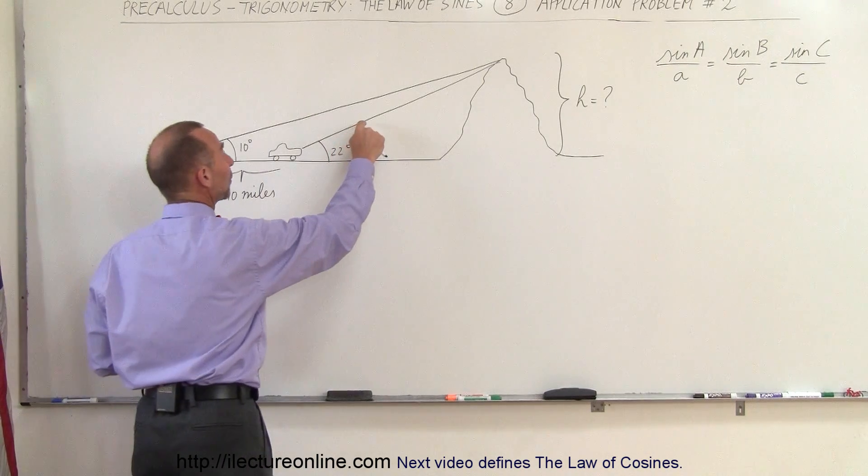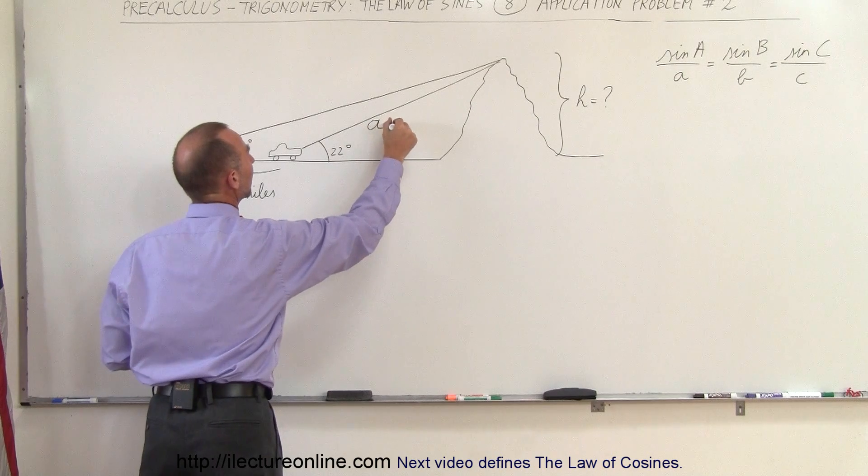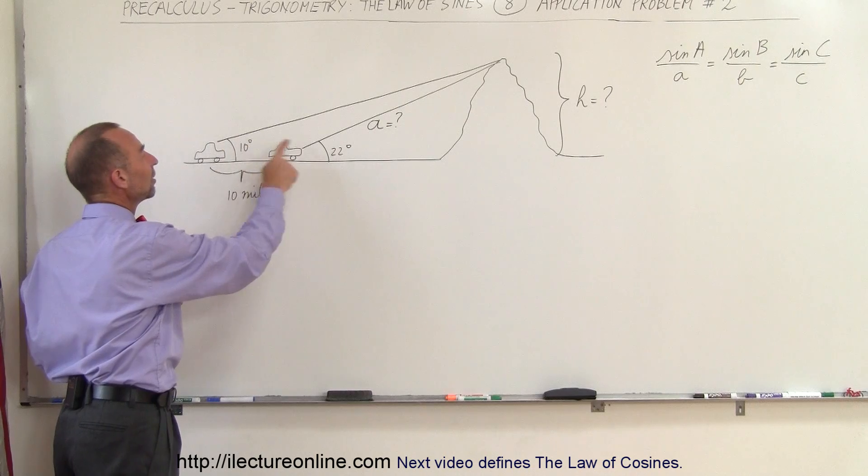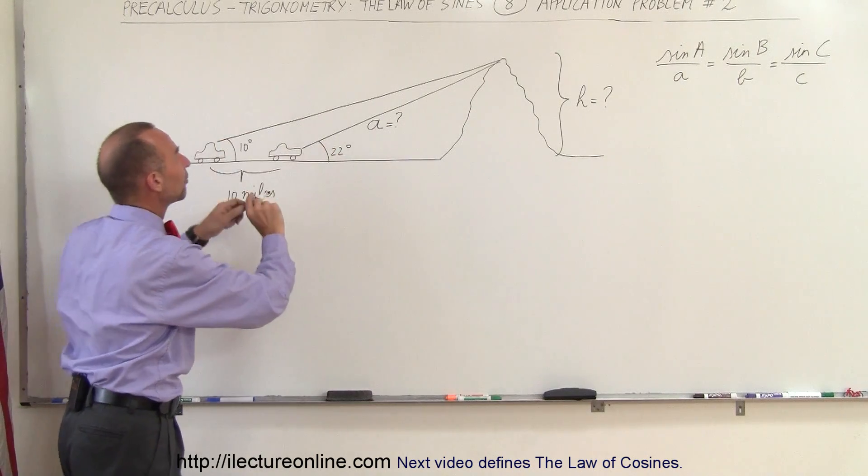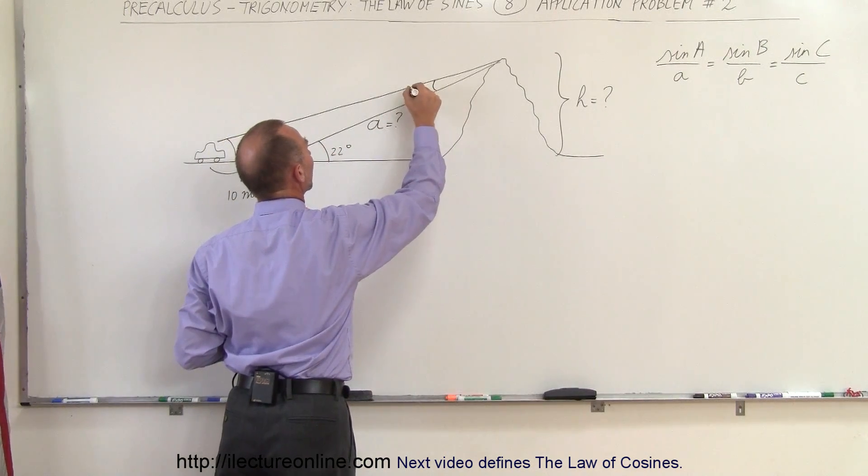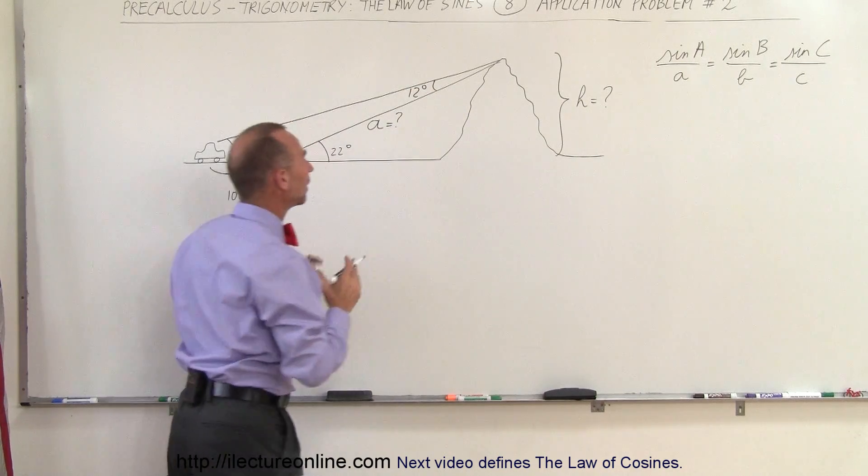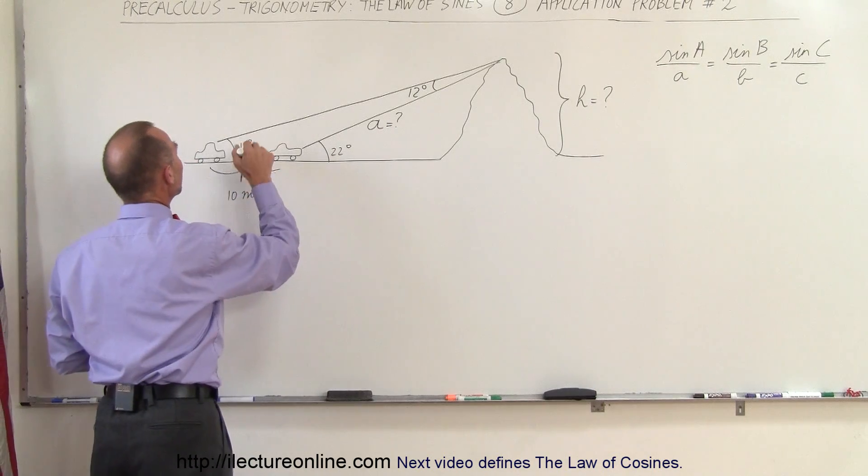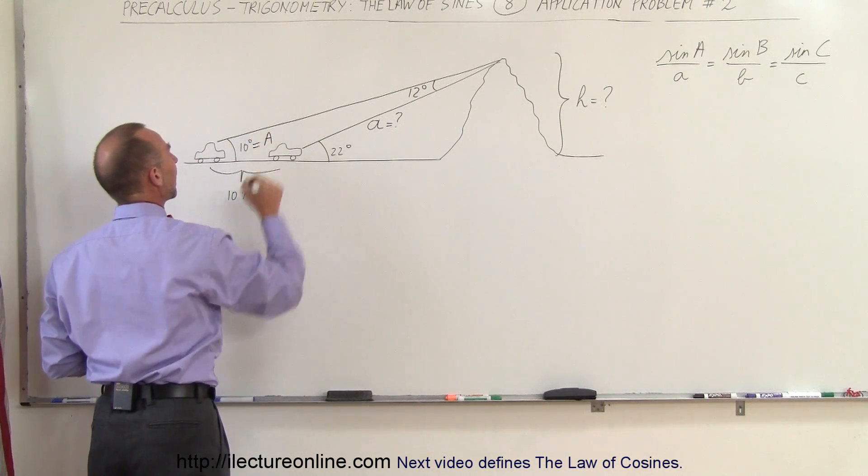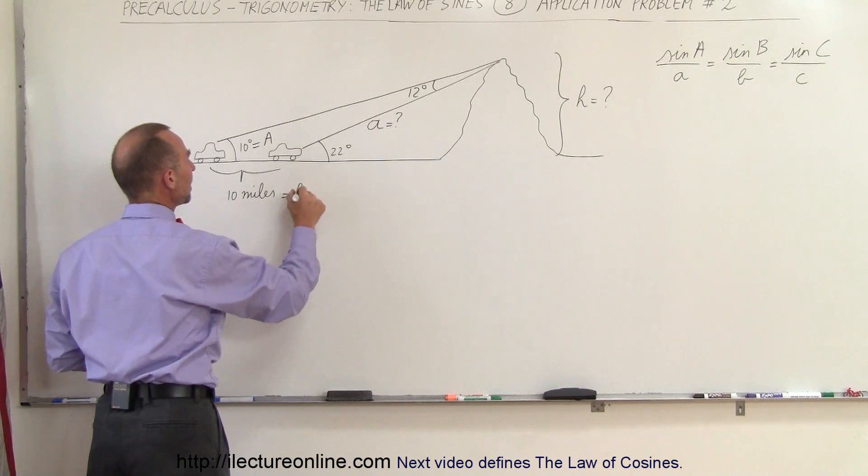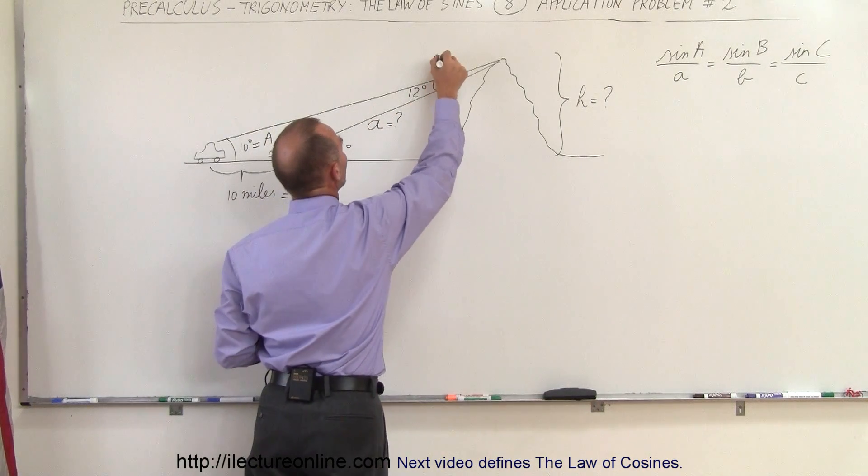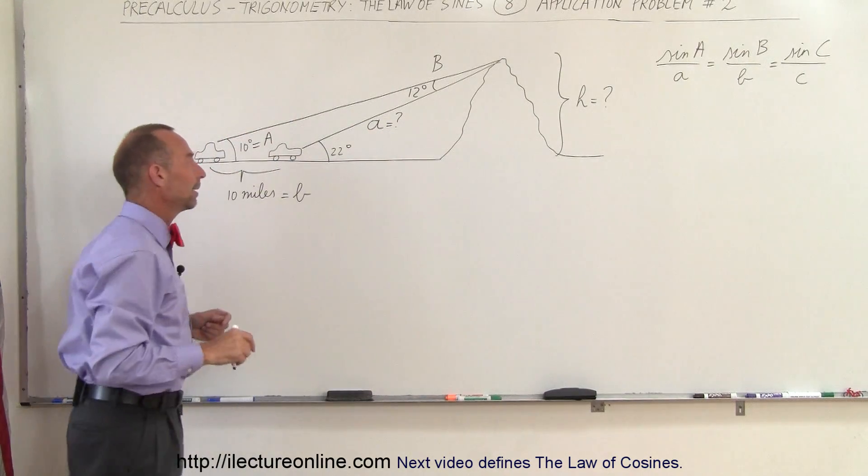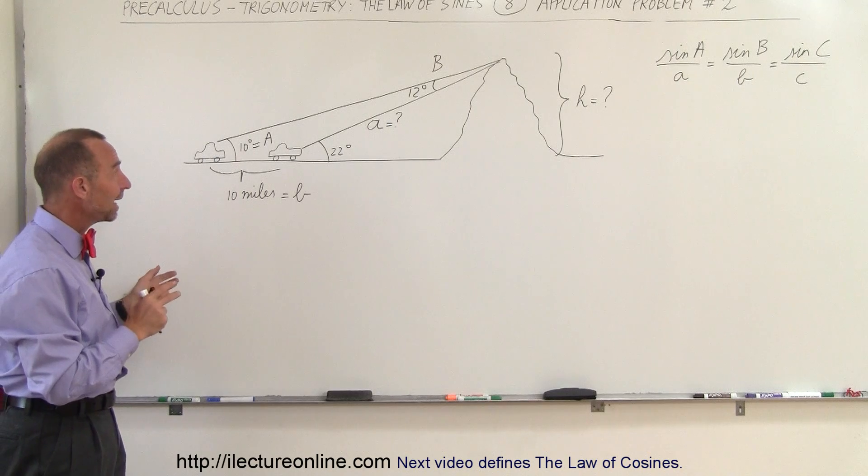We need to figure out what this side equals. Let's call this side A. If this angle is 10 degrees and that angle is 22 degrees, the difference between them is 12 degrees. This here would be angle A. If we call this side B, then this is angle B, because each side is opposite to its corresponding angle.